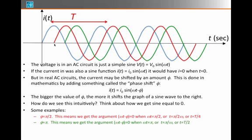When φ equals π, that means you get the argument to the sine function equal to zero when ω times time equals π, or time equals π over the ω, or t equals half of a period.